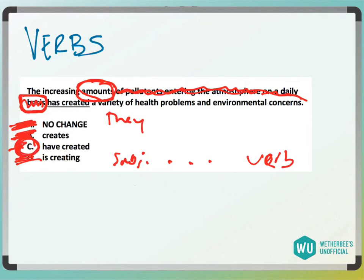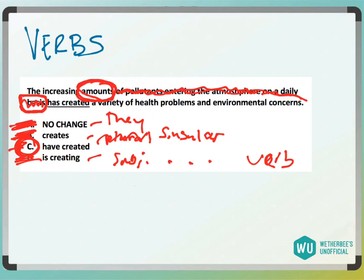So we'd have answer choice C, because A, B, and D are all singular, and C is plural. So we have to make it agree with 'amounts.' Don't just quickly try to make the verb agree with the word that occurs directly in front of it, because it's not always the subject. Oftentimes when you have these splits where A, B, and D are all singular and this one's plural, it's probably going to be the plural one anyway. But again, just make sure you know the subject. So answer choice C.